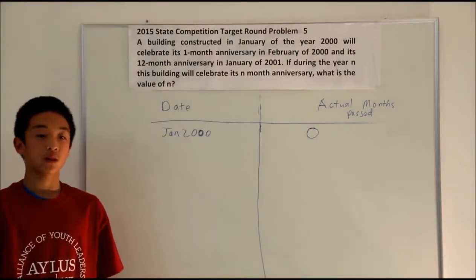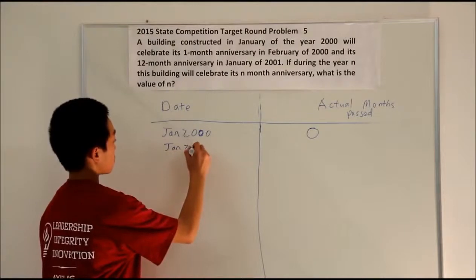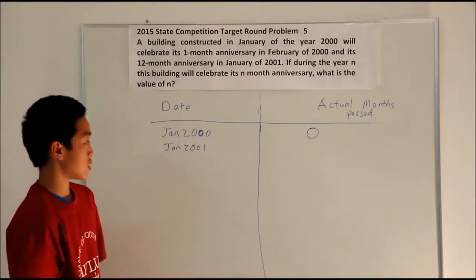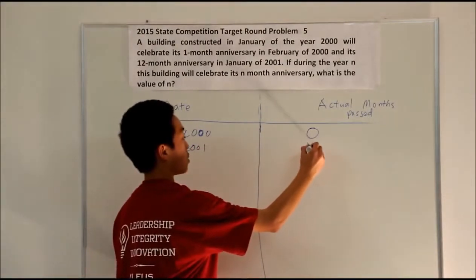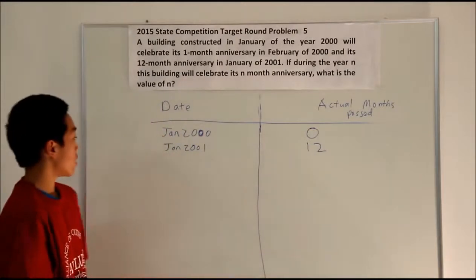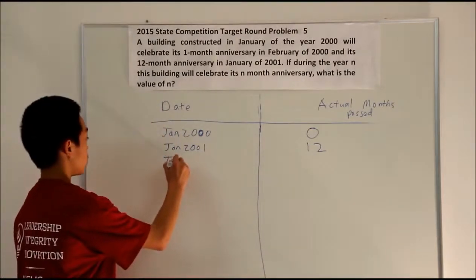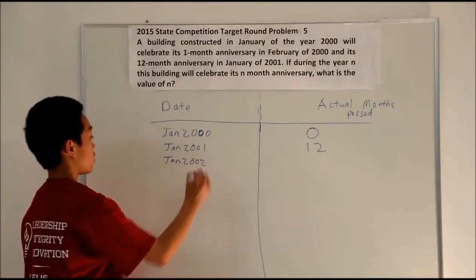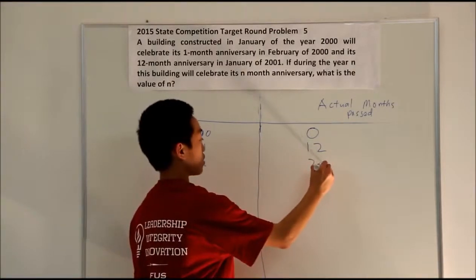For January of 2001, a whole year has passed, so a total of 12 months have passed. For January of 2002, two years have passed, so that's 24 months.